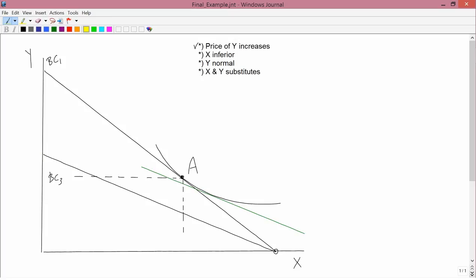X and y being substitutes means they need to move in opposite directions. Complements would go in the same direction; substitutes go in opposite directions. So x and y being substitutes means you must not be in this region here. Put the word 'no' here. Because if you were in this region, then measuring from a, x would go down and y would go down, so they'd be going in the same direction, so they'd be complements. So you can't be there.